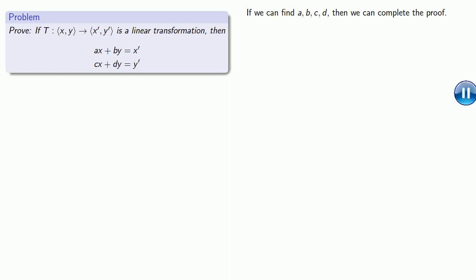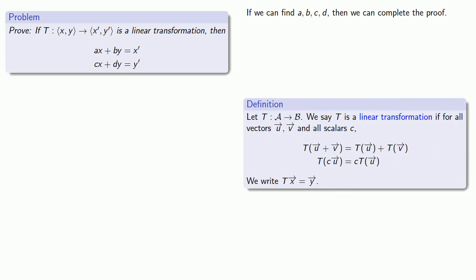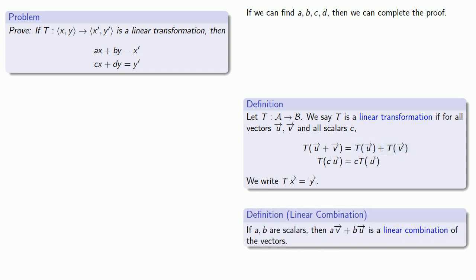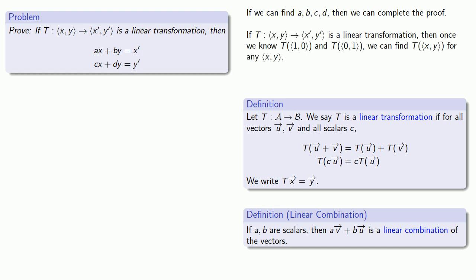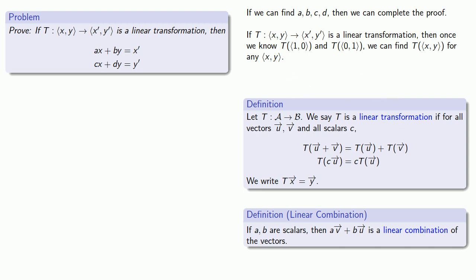One important idea is: if I have a linear transformation, then as soon as I know what that linear transformation does to a couple of vectors, I can find what it does to every linear combination of those vectors. So it may be most useful to find what the linear transformation does to the vectors (1, 0) and (0, 1), because then I can express any vector (x, y) as a linear combination of these two vectors. So suppose my linear transformation applied to (1, 0) gives us a vector (a, c), and likewise applied to (0, 1) gives us the vector (b, d).